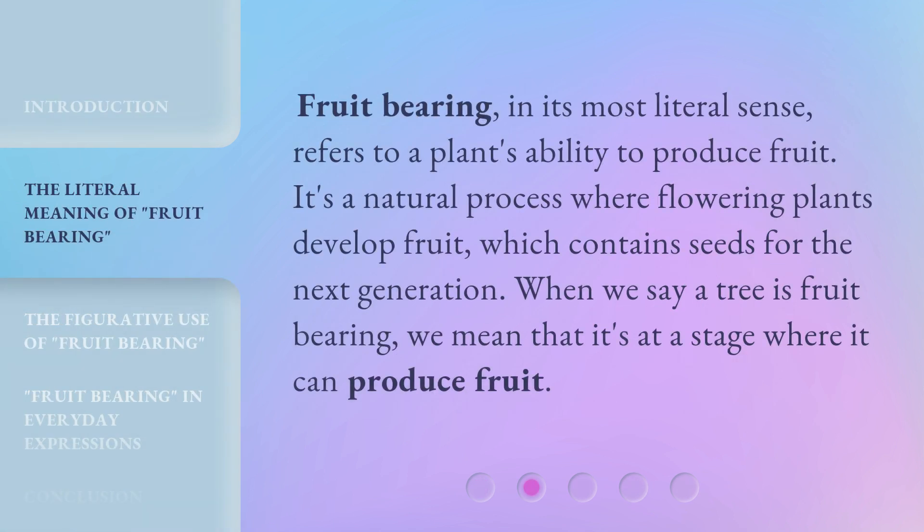"Fruit-bearing," in its most literal sense, refers to a plant's ability to produce fruit. It's a natural process where flowering plants develop fruit, which contain seeds for the next generation. When we say a tree is fruit-bearing, we mean that it's at a stage where it can produce fruit.